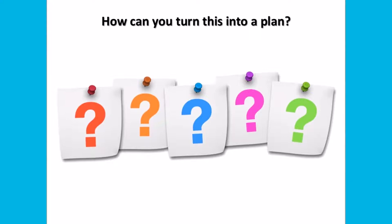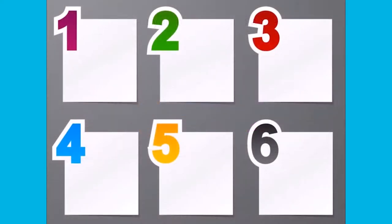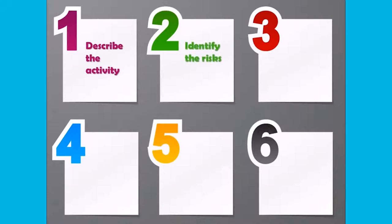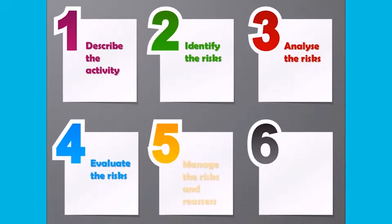So how do you practically do this? How can you turn this into a plan? All you have to do is consider six steps for each activity or event, which are: step one, describe the activity; step two, identify the risks; step three, analyze the risks; step four, evaluate the risks; step five, manage the risks and reassess; and step six, review.